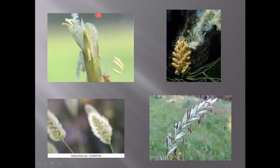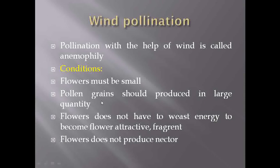The anthers are very hairy. See how the pollination takes place — how there is a transfer of pollen grains from one place to another with the help of wind. To carry out wind pollination, the flower must be small; there is no need for a large flower. Pollen grains should be produced in large quantity because during wind pollination there is a huge wastage of pollen grains. There is no need for the flower to be attractive or to have a particular fragrance.